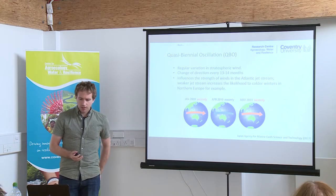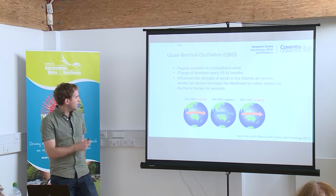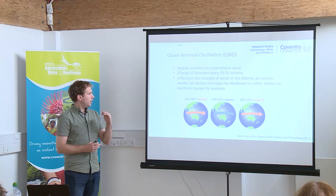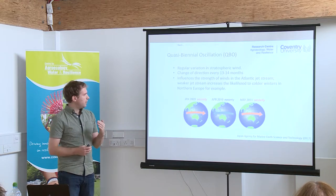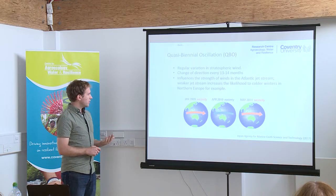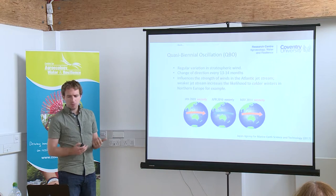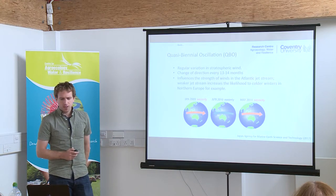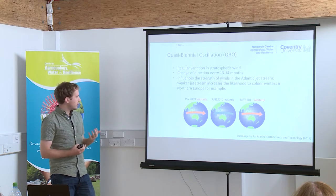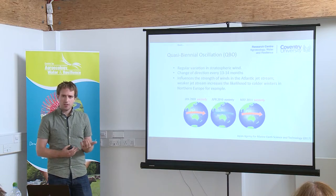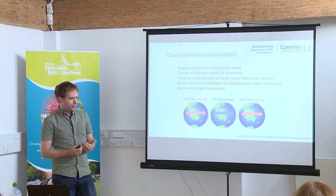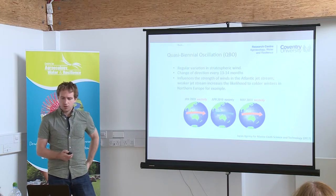Another interesting mode is the Quasi-Biennial Oscillation — the regular variation in upper atmospheric winds across the equator. There's a change in direction of the upper atmospheric winds from westerly to easterly approximately every 13 to 14 months. An easterly phase, for instance, can really weaken the strength of the Atlantic jet stream, which results in a greater likelihood of colder winters in Northern Europe.